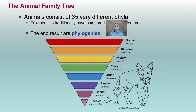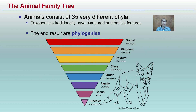Looking at the family tree, animals consist of 35 very different phyla. Taxonomists traditionally have compared anatomical features, and the end result is phylogenies. We're looking at the domain, kingdom, phylum, class, order, family, genus, and species. Here we're looking at the phyla level — being more specific. All animals are in the kingdom Animalia and are all in the domain Eukarya, and we're looking at separating out the phyla to be a little bit more specific.